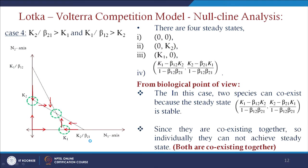For Case 4, there are four steady states including the coexistence point. In this case the two species can coexist because the coexistence steady state is stable — points above the null-cline line point toward the n1 axis and points below also converge toward the stable coexistence point. Since both species coexist, individually they cannot achieve a separate steady state.